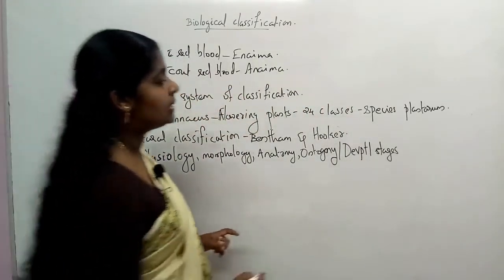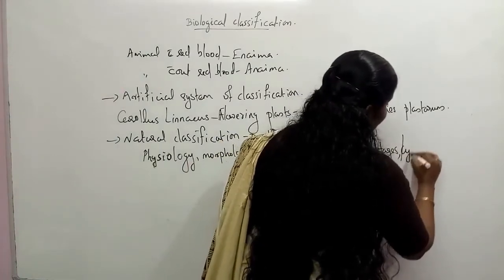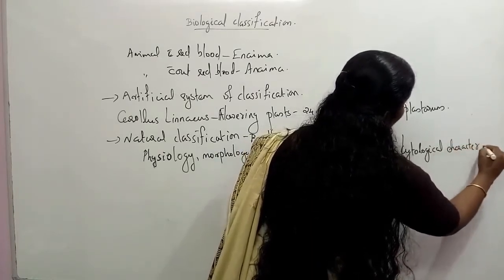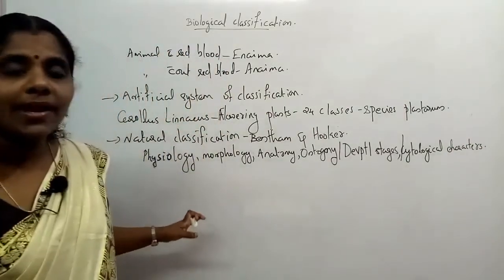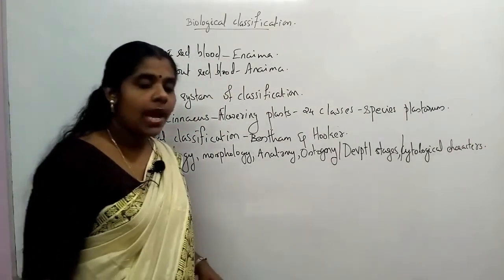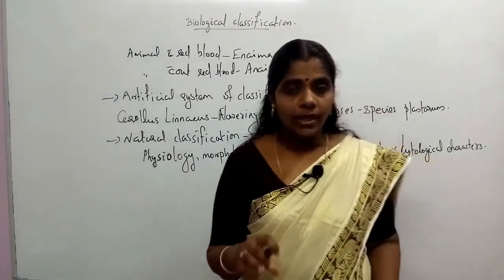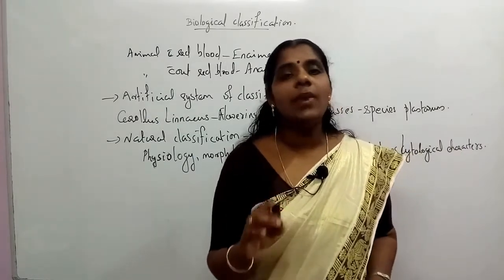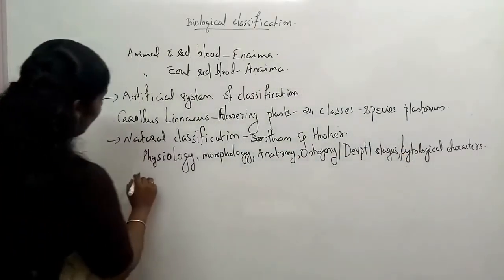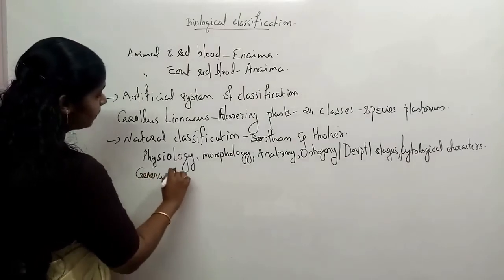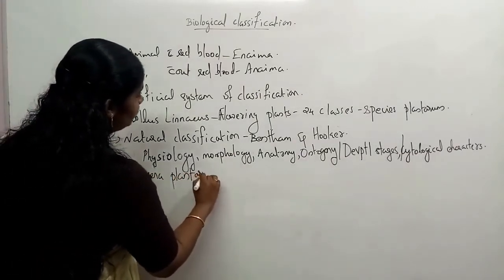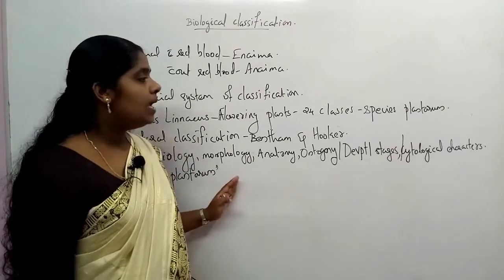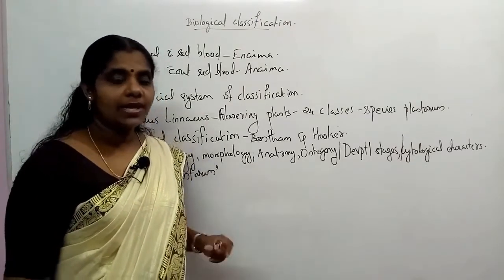Many characteristic features are considered in natural classification, including cytotaxonomy — cytological characters, cellular characters — and biochemical characters. Bentham and Hooker applied this natural classification in their book called Genera Plantarum. However, this is an inadequate classification because we don't consider the relationship between organisms.